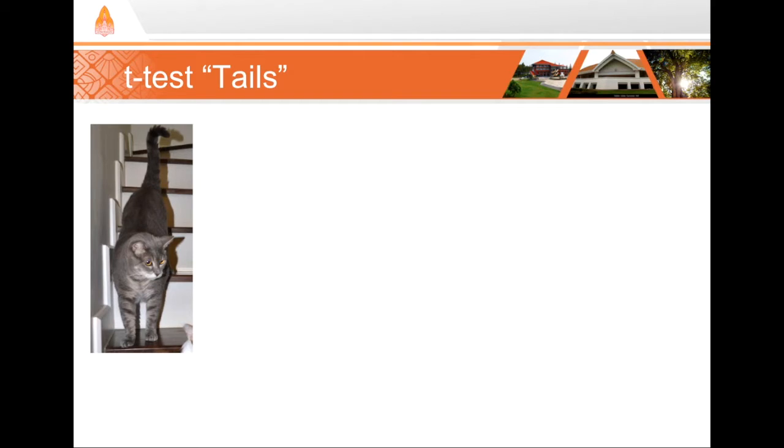So, just in case choosing from three different t-tests wasn't enough choices for you, for each of those t-tests, we have to choose also between the one-tailed and the two-tailed version. So this here in the picture is one of my cats. His name is Fritz. So I chose the one-tailed version of him. Could you imagine if I had chosen the two-tailed version? Anyway, in cats, we usually choose the one-tailed version. But in statistics, your choice of one or two tails depends on what your alternative hypothesis is.